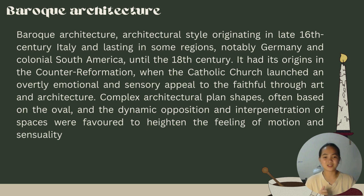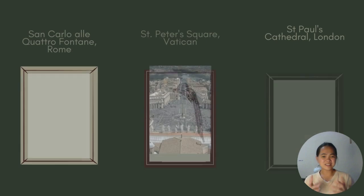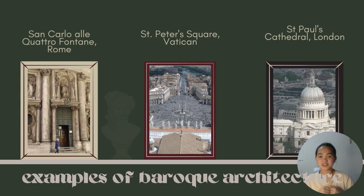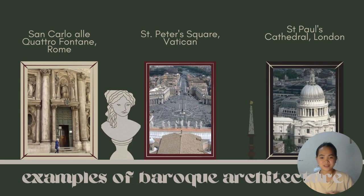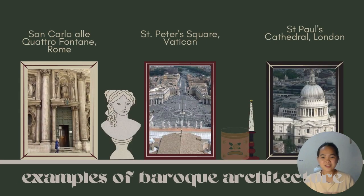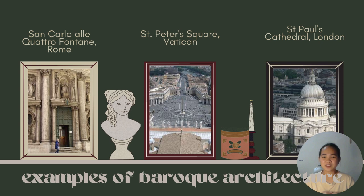Examples of baroque architecture include the San Carlo alle Quattro Fontane in Rome, Saint Peter's Square in Vatican City, and Saint Paul's Cathedral in London.